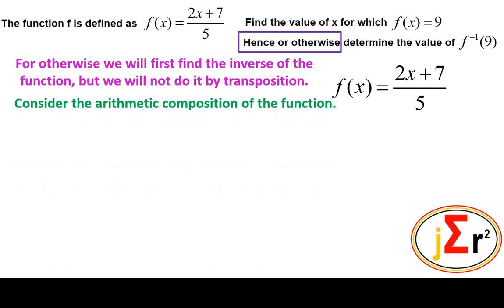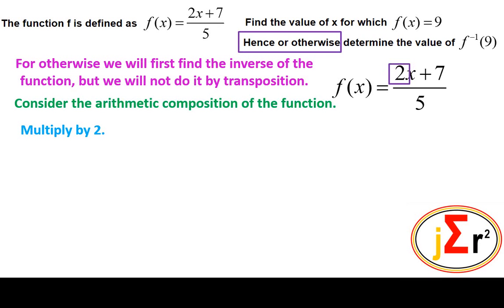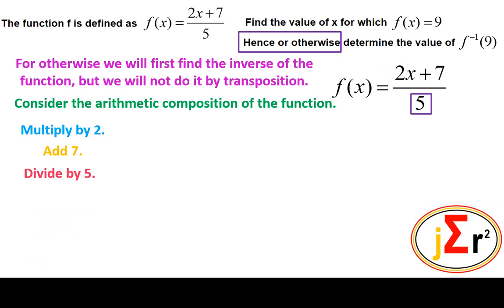Consider the arithmetic composition of the function. First, multiply by 2. Then add 7. Finish up by dividing by 5. So: multiply by 2, add 7, divide by 5.